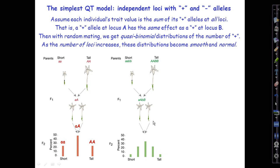Then, East crosses them among themselves, and out comes this more complicated distribution with five different categories of number of tall-making alleles. The shortest will be little a, little a, little b, little b, just like the short parent. Conversely, big A, big A, big B, big B will be the tallest, just like the original tall parent.